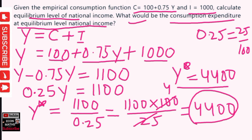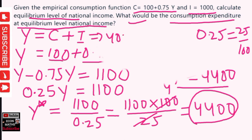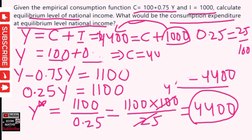Since Y = C + I, our Y of 4400 is equal to C plus 1000. Therefore, C = 4400 - 1000, which comes out to be 3400.